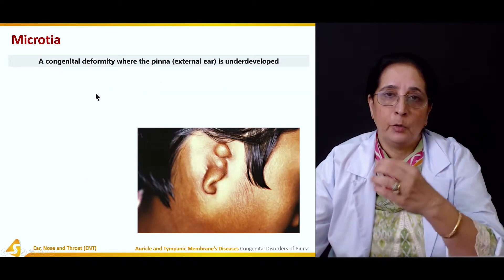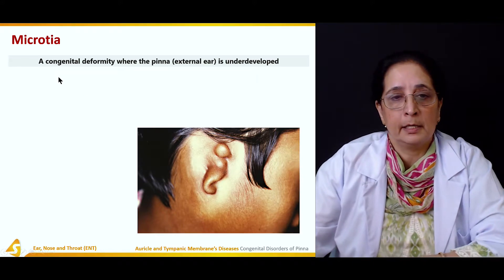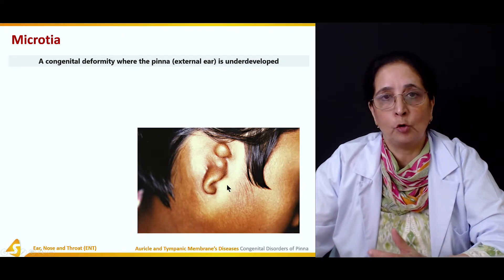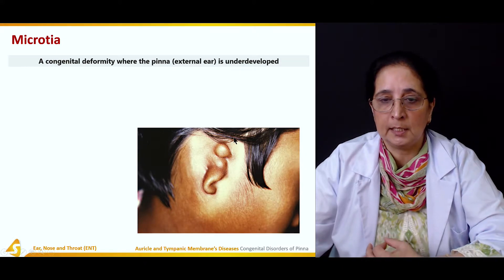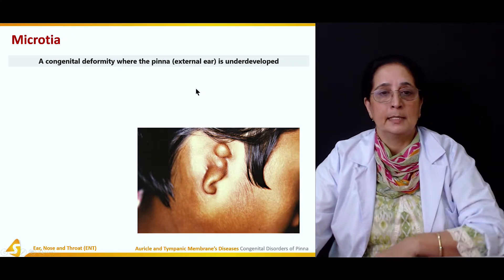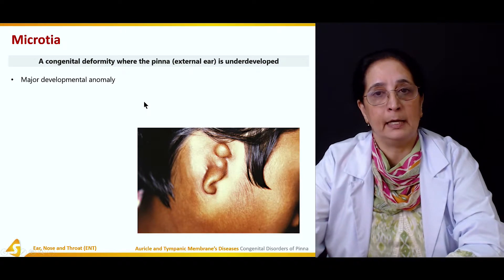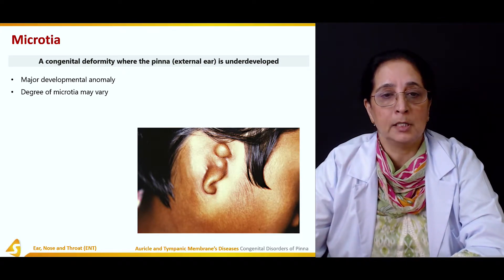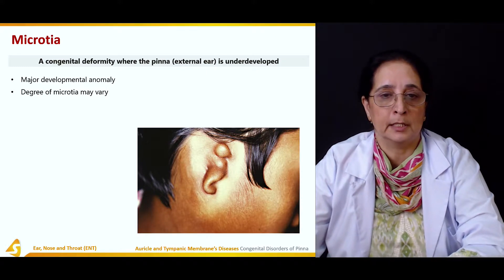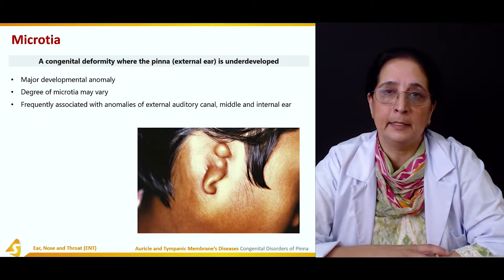Microtia — 'micro' means small, 'otia' refers to the ear. In this congenital deformity, the pinna or external ear is underdeveloped. As seen in the diagram, the ear is small or poorly developed, a major developmental anomaly. The degree of microtia may vary and it is frequently associated with anomalies of the external auditory canal, middle ear, and inner ear.